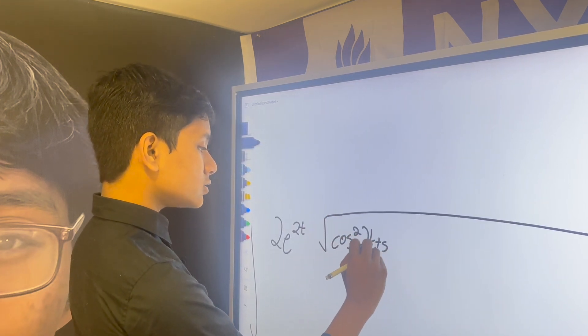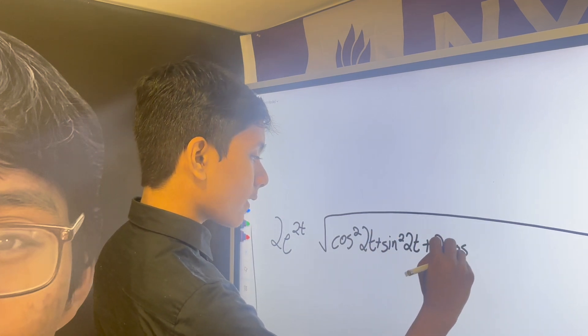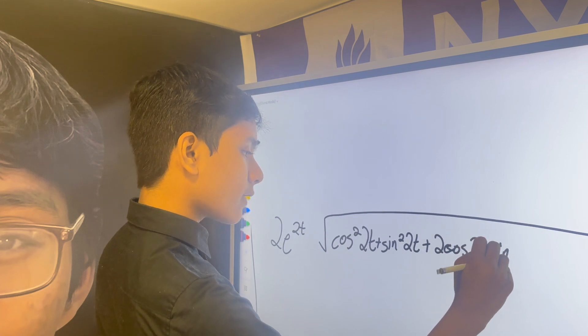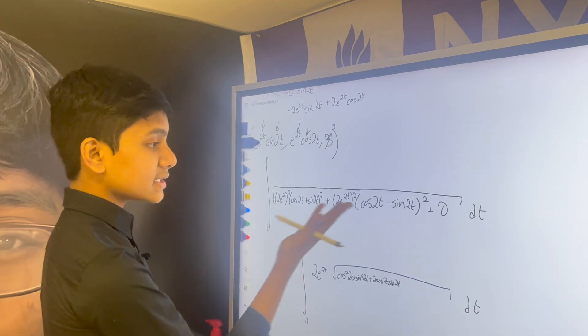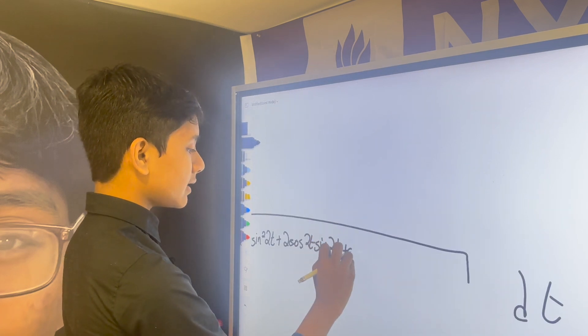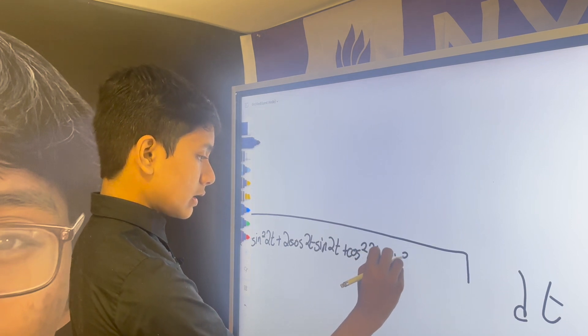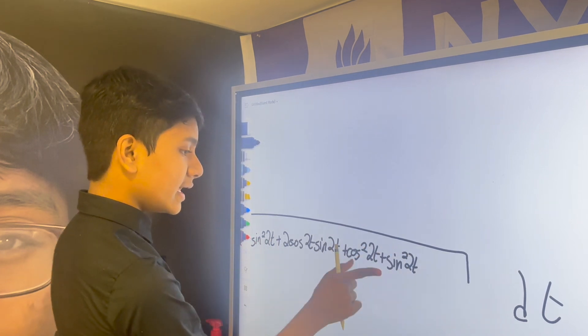Cosine 2t plus sine 2t squared is just cosine squared 2t plus sine squared 2t plus 2 cosine 2t sine 2t and the funny coincidence is that cosine 2t minus sine 2t does the exact same thing but makes this negative.